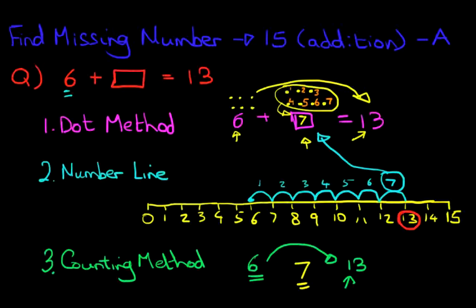So those are the three methods: the dot method, the number line, and the counting method for when we are finding the missing number with numbers up to 15 and we are doing addition.